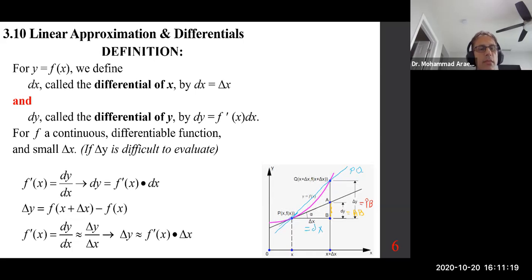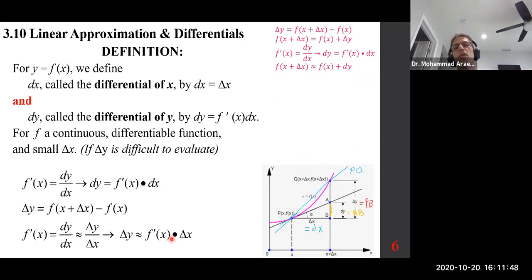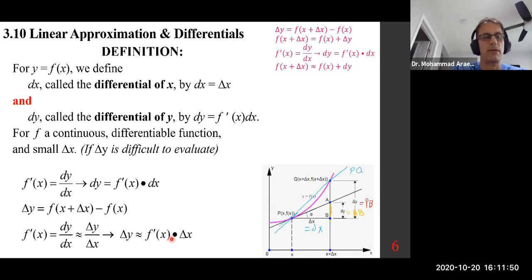F prime of x is dy dx. Dy is simply f prime of x times dx. Delta y is f of x plus delta x minus f of x by precise definition, as you can see from the graph. And f prime of x, which is dy dx, can be approximated by delta y over delta x. Therefore, delta y can be approximated by that. So it gives rise to the following equations.